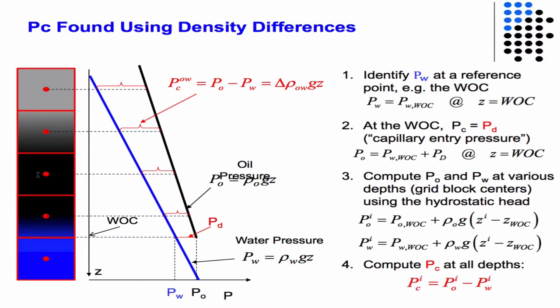If we now discretize our reservoir into grid blocks, we go to the water-oil contact line where the saturation is one. There the capillary pressure is the capillary entry pressure PD. At that point, we can initialize two curves: the blue line associated with the hydrostatic head of water, and the black line associated with the hydrostatic head of oil. The difference between those two curves is the capillary pressure. As we go up the reservoir, we know this starting point and can compute values from it.